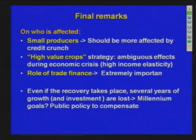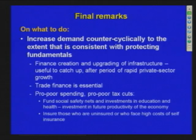In conclusion, small producers are most affected by the credit crunch, and the results for high-value crops are ambiguous. Trade finance plays an extremely important role. Even if recovery takes place, several years of growth are lost, seriously affecting the accomplishment of the MDGs. For policy, developing countries — which were in a better position than in previous crises — should pursue counter-cyclical demand. Infrastructure investment could play a crucial role in reducing trade finance costs, since transportation cost is a major factor. And of course, pro-poor spending is needed to address increasing poverty and malnutrition. Thank you.